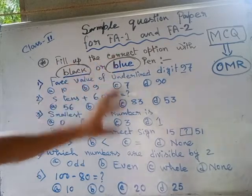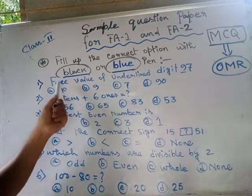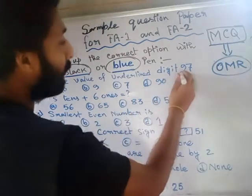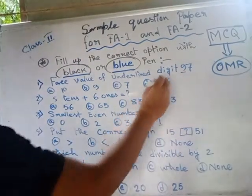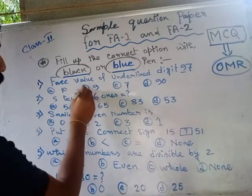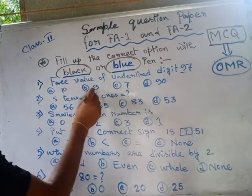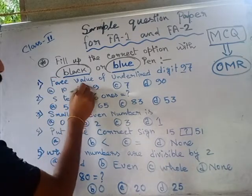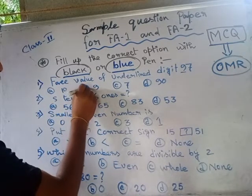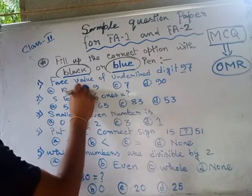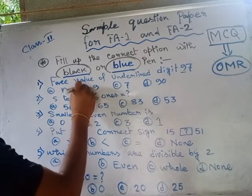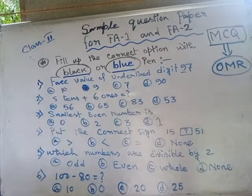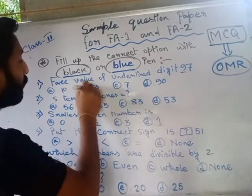For example, the question says to fill up the correct option for the place value of the underlined digit. The underlined digit is 9, so the place value of 9 is obviously nine. So option B is the correct answer — fill up that option very carefully.